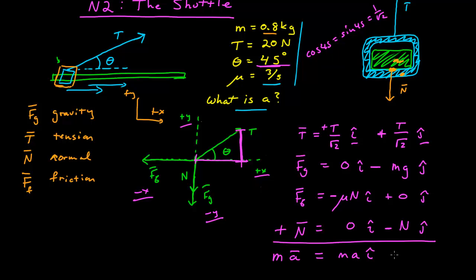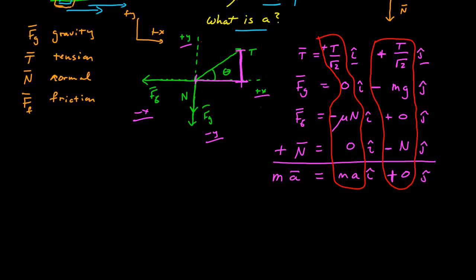Now this vector sum of all these forces is the mass of the shuttle times its acceleration, and we know that's entirely along the x axis. So that gives us two relationships we can work with. In the y axis we have T over the square root of 2 minus mg minus n equals zero. And in the x we have T over the square root of 2 minus mu times the normal force equals the mass of the shuttle times the acceleration. I have two unknowns: the normal force and the acceleration. So I can solve.